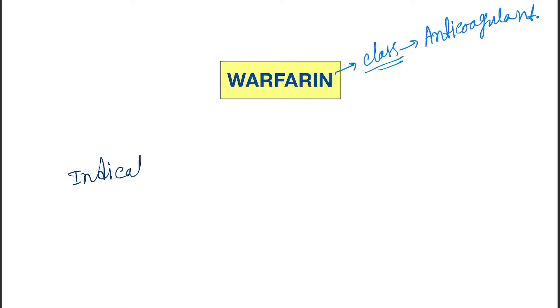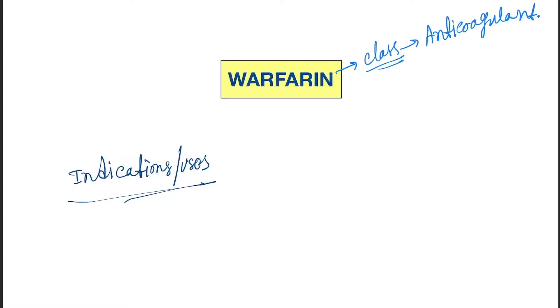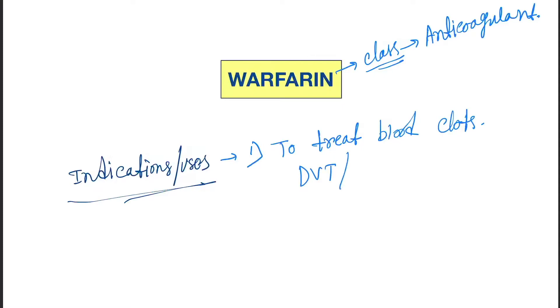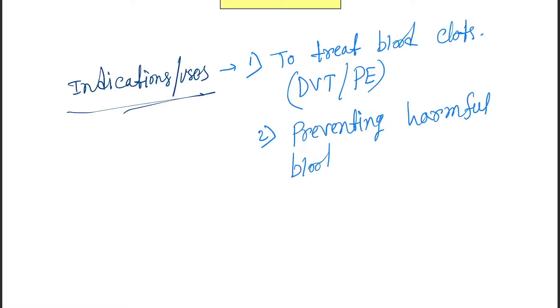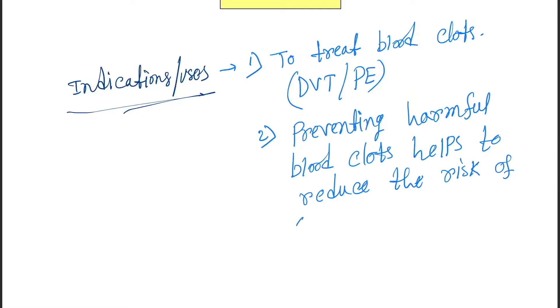The class of this drug is anticoagulant. The indications or uses include: number one, to treat blood clots such as in DVT (deep vein thrombosis) or pulmonary embolus; and number two, preventing harmful blood clots, which helps to reduce the risk of a stroke or heart attack.